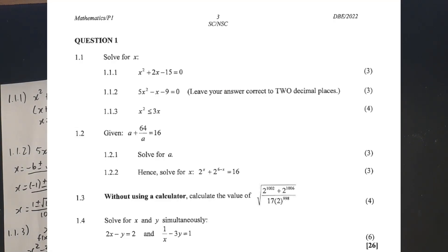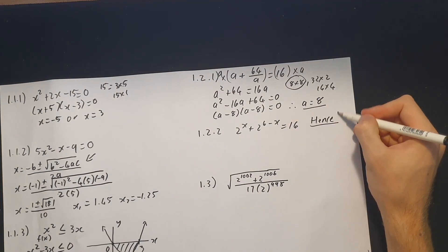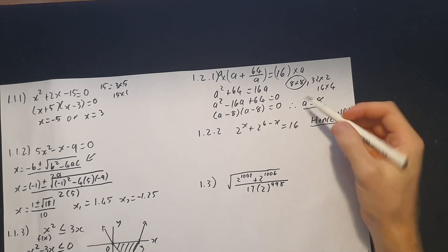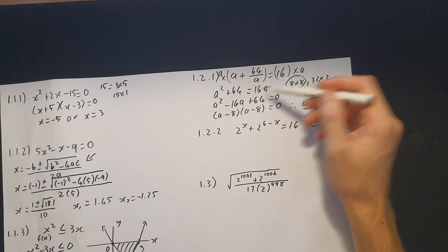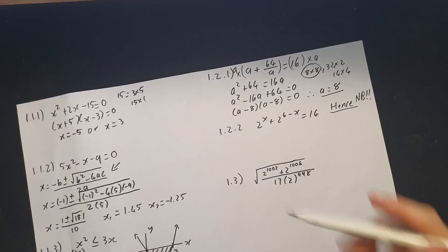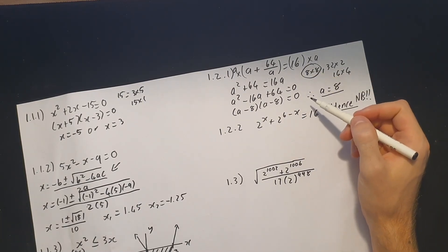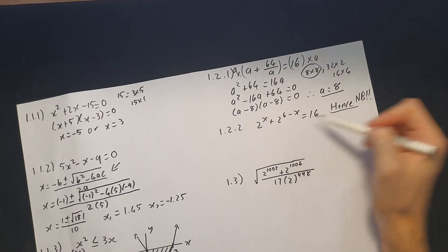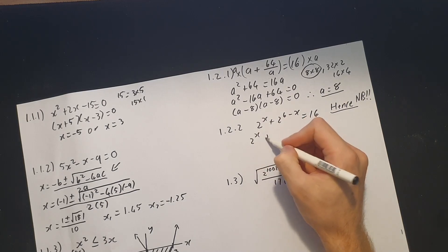For 1.2.2: solve for x in 2^(x+2) · 2^(6−x) = 16. Because they use the word 'hence', we must use what we found in 1.2.1. Expanding: 2^x · 2^(6/2^x) = 16, which simplifies to 2^x + 64/2^x = 16.